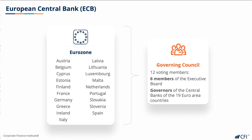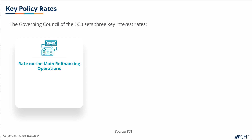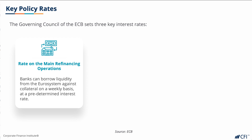Pay very careful attention to the ECB president's press conference after decisions are announced. The Governing Council of the ECB sets three key interest rates. The first is the interest rate on the main refinancing operations, where banks in the eurozone can borrow liquidity from the euro system by pledging collateral on a weekly basis. The rate on main refinancing operations is the interest rate they would have to pay to borrow from this facility.